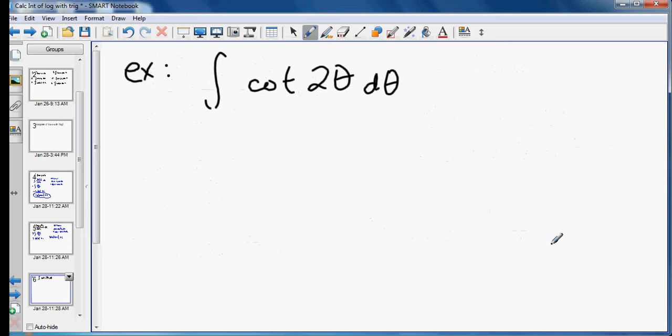Okay, cotangent of 2 theta. So this is an example where if you know the rule for cotangent, it's pretty quick. Or you can do it like we did the first example with tangent where you can rewrite it. Because cotangent is the same as cosine over sine. But I'm going to use the rule on this one. The rule for the integral of cotangent.